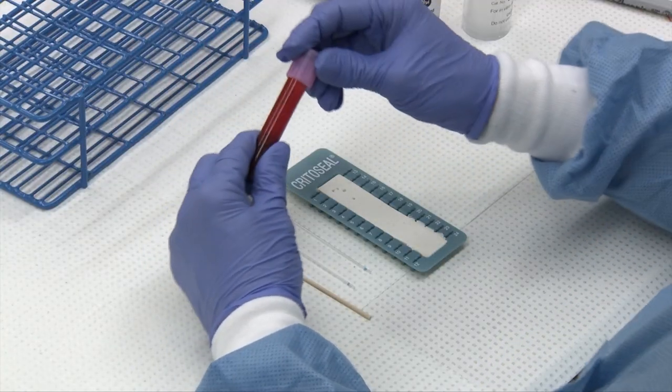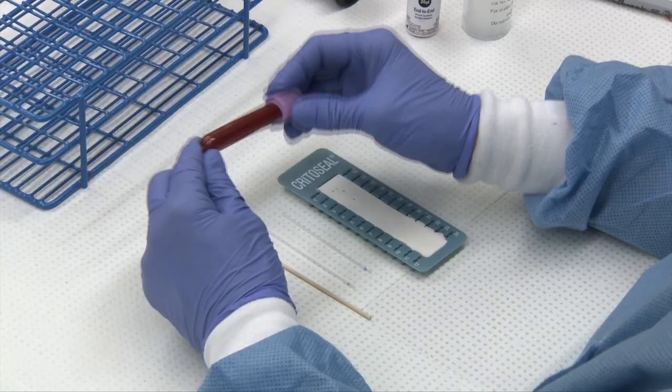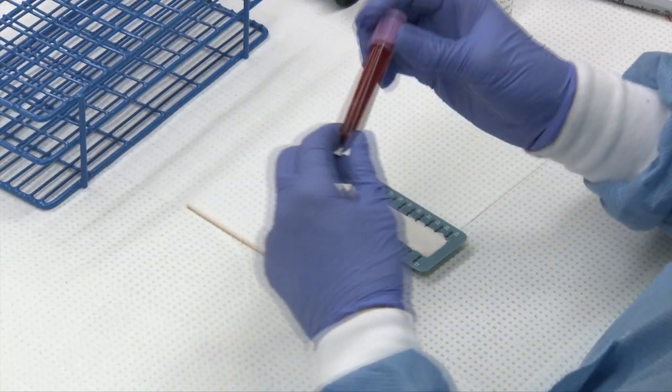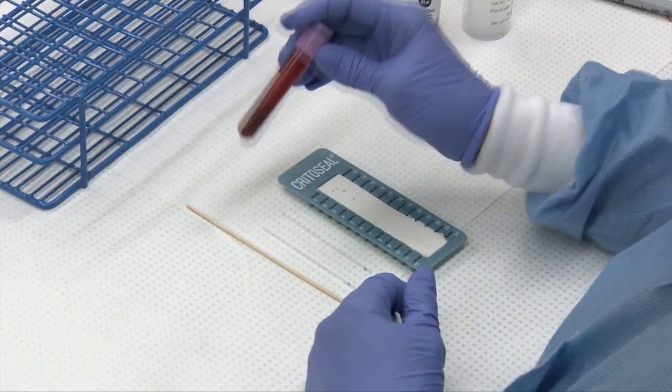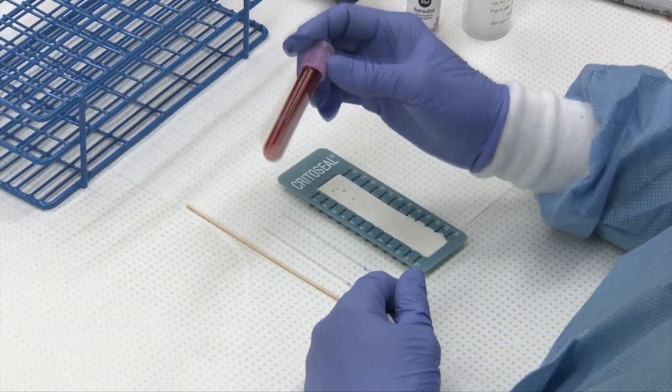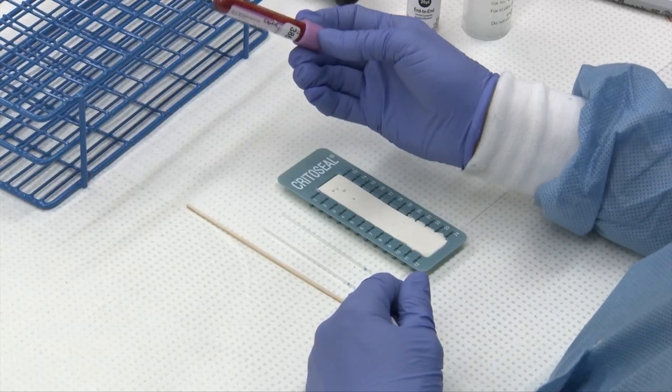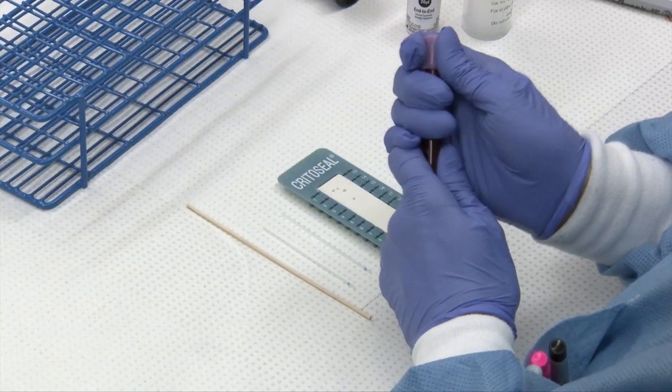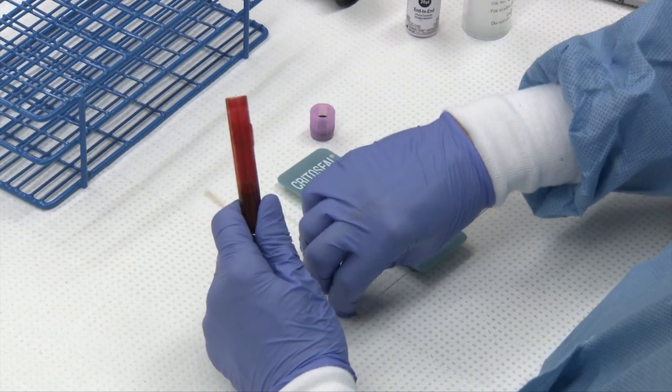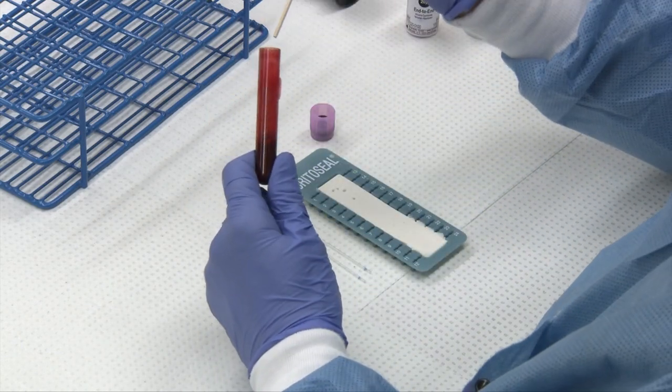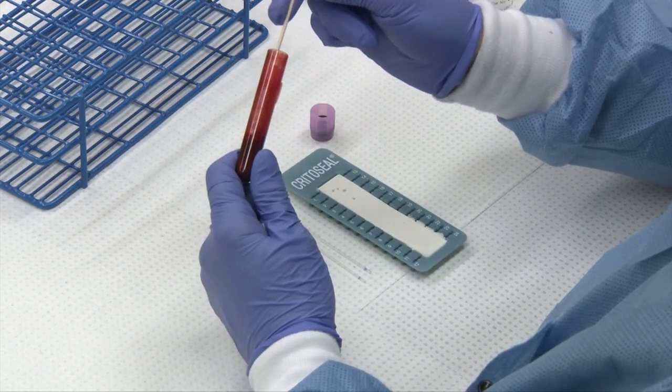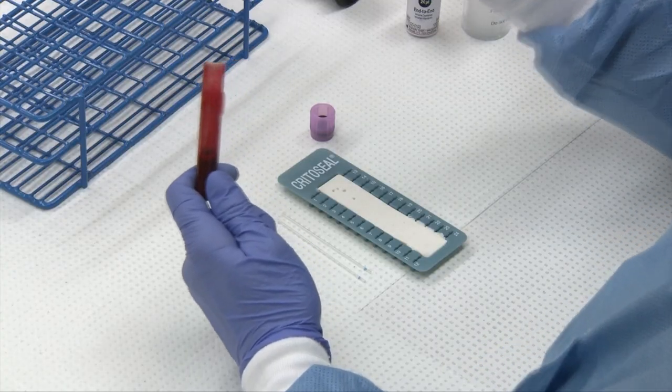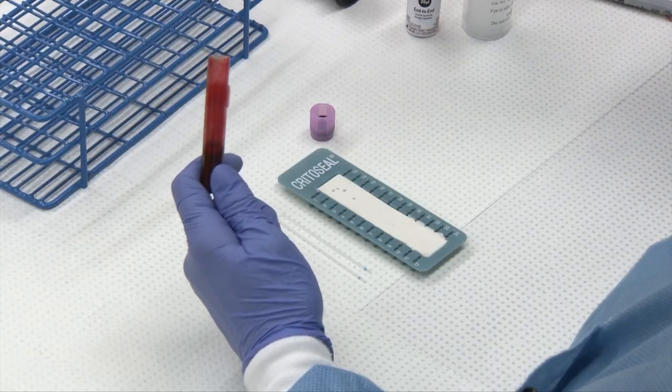You want to start with an EDTA tube that is unclotted and well-mixed. Mix your tube after collection by gentle inversion and prior to doing any testing because the blood will settle out. If you are concerned there might be clots in your sample, take an applicator stick and run it around inside the sample and any clots will appear on the stick. If there's no clots, you are good to go.